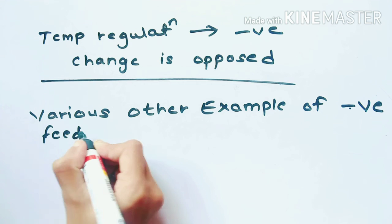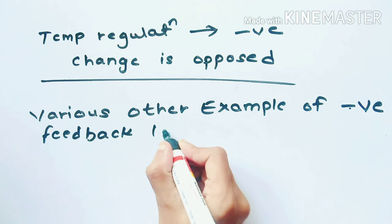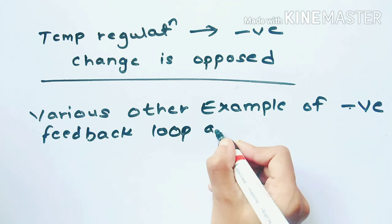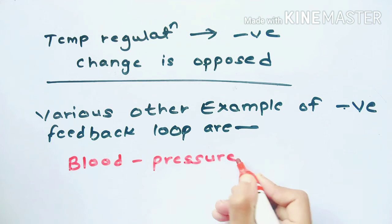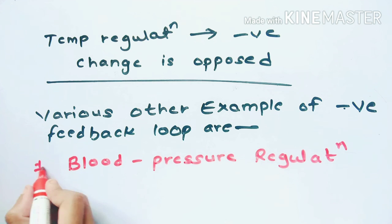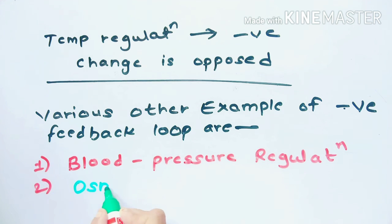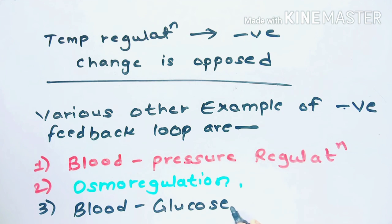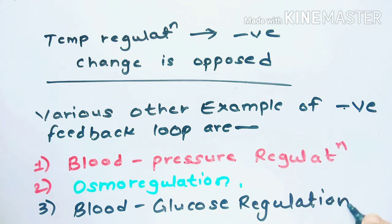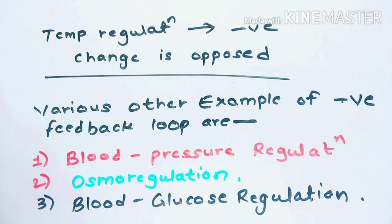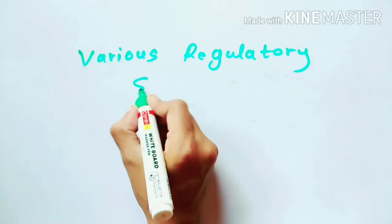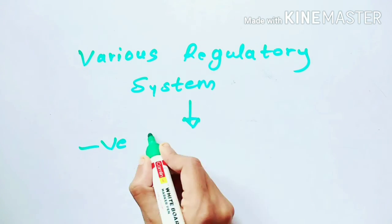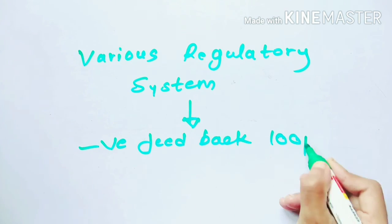Therefore, temperature regulation is an example of negative feedback as the change is opposed by the result of the system. Besides temperature regulation, there are various other examples under negative feedback loop, which include blood pressure regulation, osmoregulation, blood glucose regulation, and various other regulatory systems of the body.